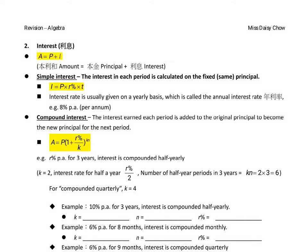Revision of the Algebra, this is Part 2: Interest 利息. So there are three formulas for you to remember. The first one is A equals to P plus I. So A stands for Amount 本利和, P stands for Principal 本金, I stands for Interest 利息.